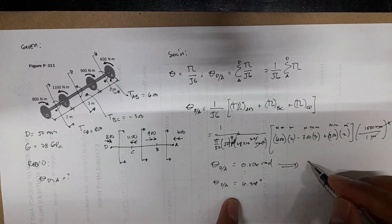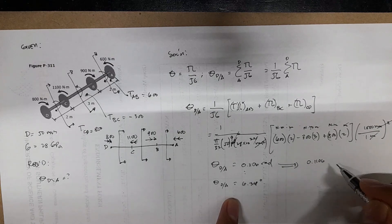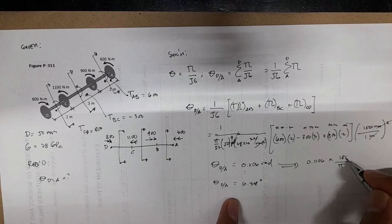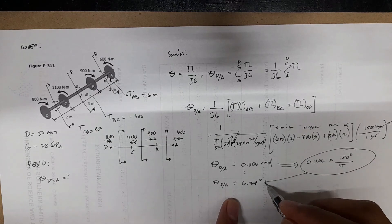So again, you just have to convert: 0.1106 times 180 degrees over pi. This will result to this one.